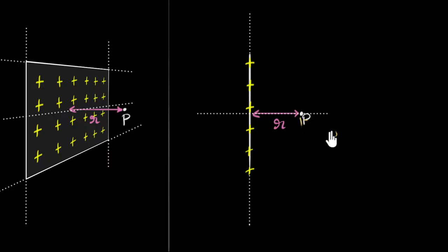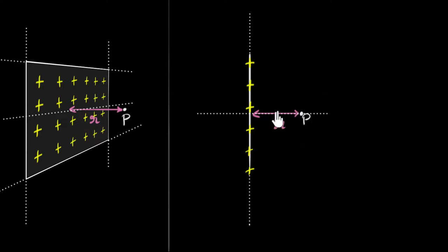The electric field cannot point upwards or downwards. The only two possibilities are towards the right or towards the left. Since we know this is positive charge, the electric field should be away from the plate — so over here it has to be towards the right. What an amazing argument, just from the symmetry argument!